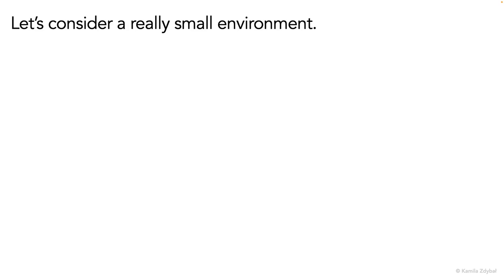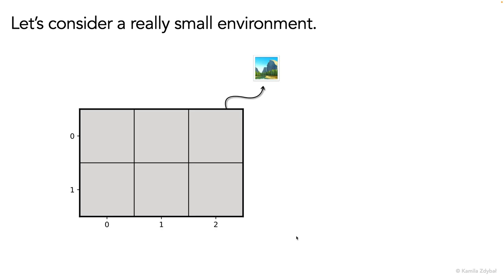So in this video we'll consider a very small environment that only has six states. This environment is a two by three grid where the agent can find himself in any of these six states. And for example, if the agent is here, then we say that he's in state one comma zero.